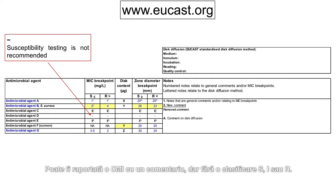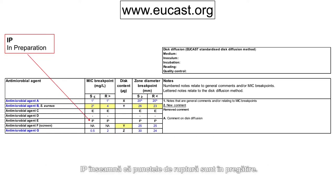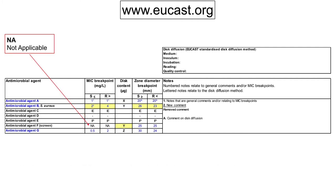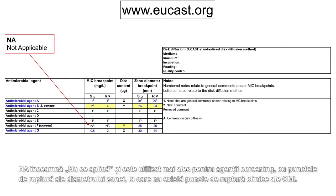Isolates may be reported as R without prior testing. IP means that breakpoints are in preparation. NA means not applicable and is mostly used for agents with zone diameter screening breakpoints where there are no clinical MIC breakpoints.